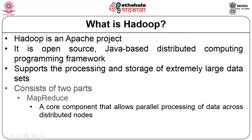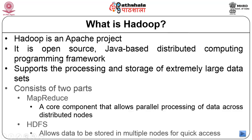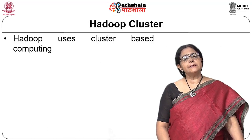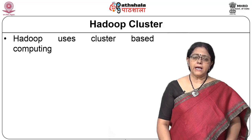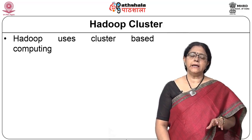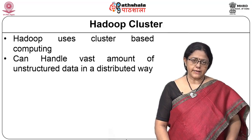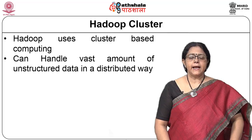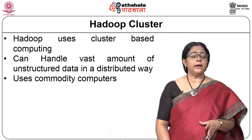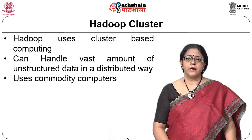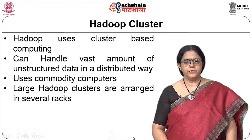Hadoop is an Apache open-source Java-based distributed computing programming framework. It supports processing very large amounts of data using only commodity hardware. Hadoop has two parts: one is MapReduce and the other is HDFS. It is a cluster-based system that stores and holds the data for MapReduce to process. It works most efficiently when a cluster is in place and can handle both structured and unstructured data.